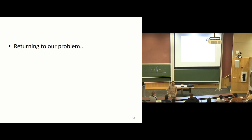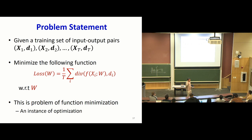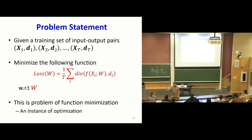So this is the general principle. Now let's return to the problem we began with: finding the parameters of a neural network to compute a specific function. Here's the problem statement: you are given a collection of input-output pairs. Over the collection of input-output pairs, you compute the average divergence — the loss — and we want to minimize this average divergence with respect to the parameters of the network. This is just a standard case of function minimization. We can use the same approach that we just saw.